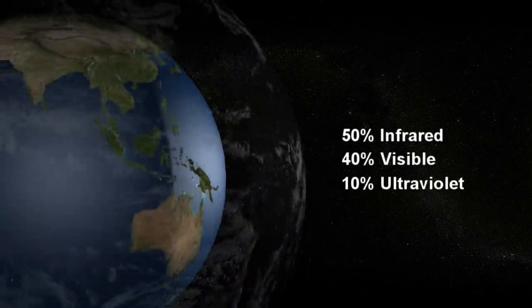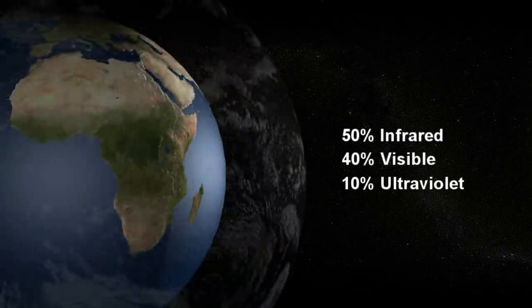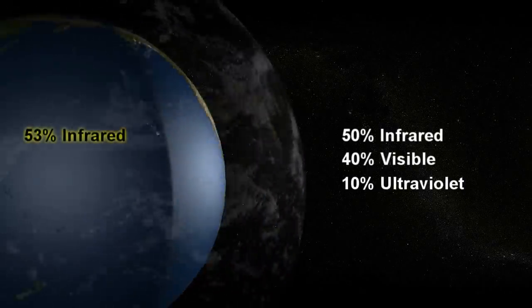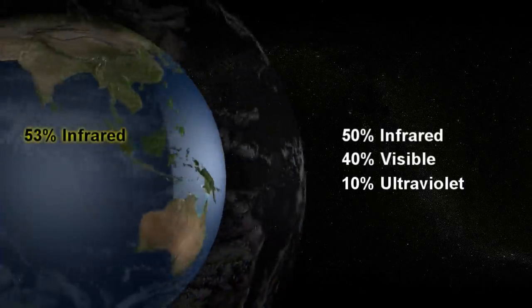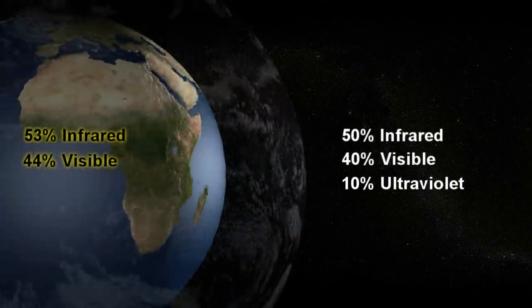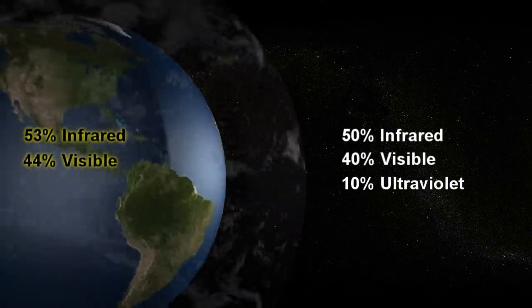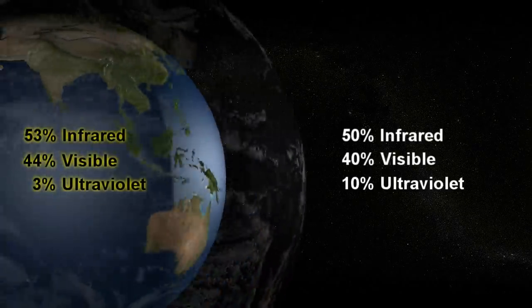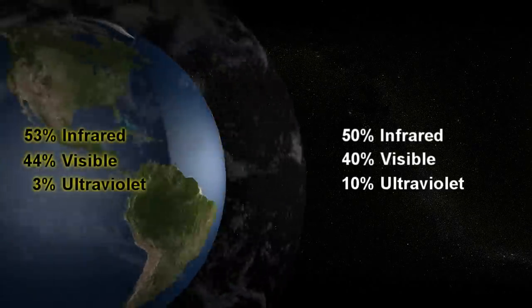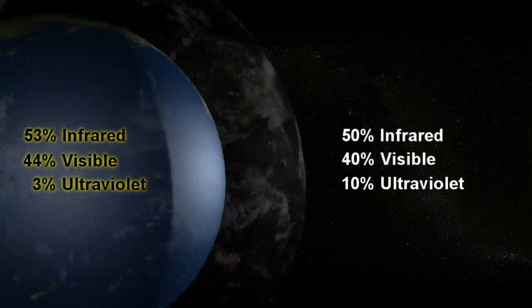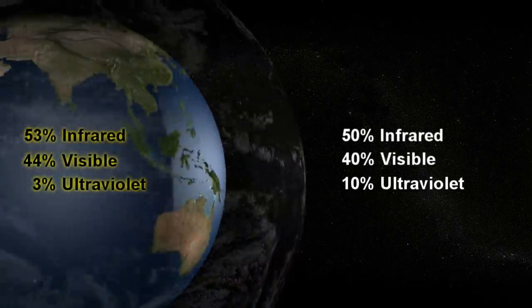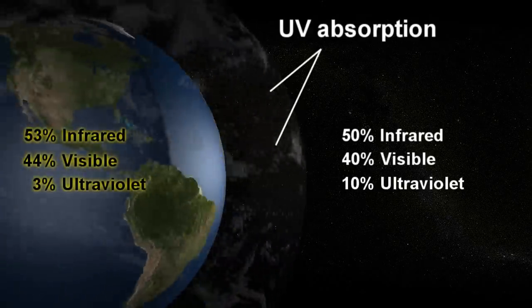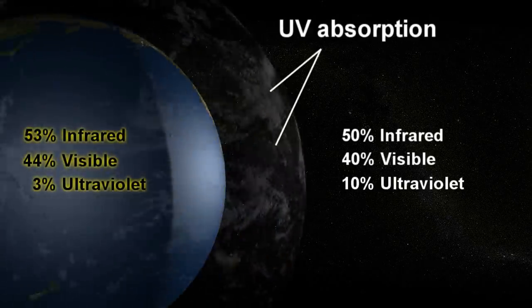On the Earth's surface, this distribution changes to 53% infrared, 44% visible, and 3% ultraviolet, with a good majority of the shorter wavelength, high-frequency ultraviolet rays absorbed in the upper and lower atmosphere.